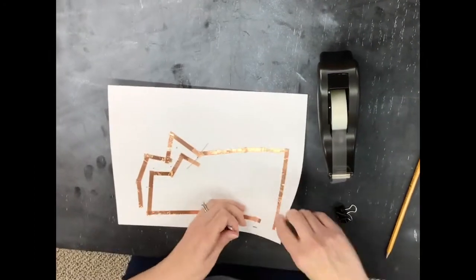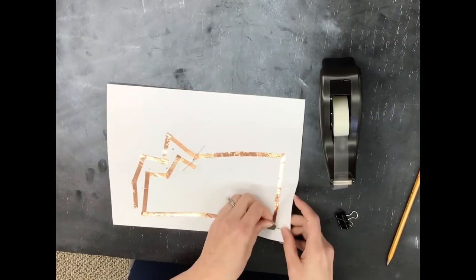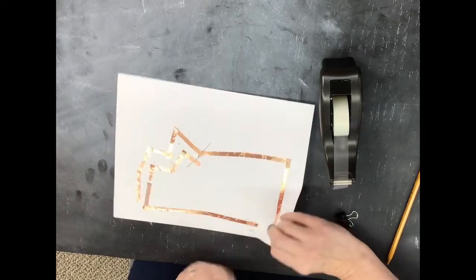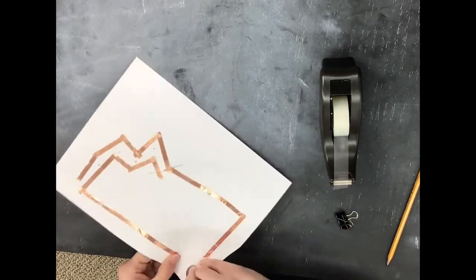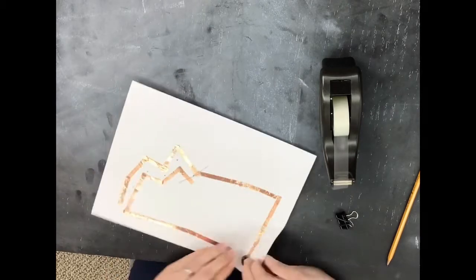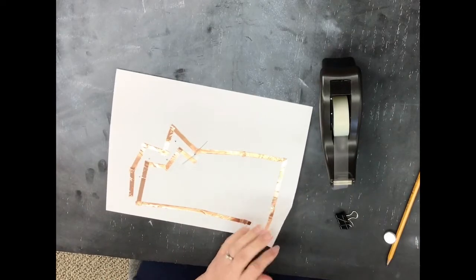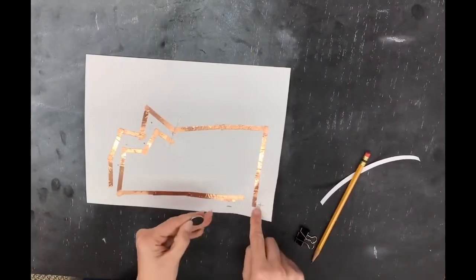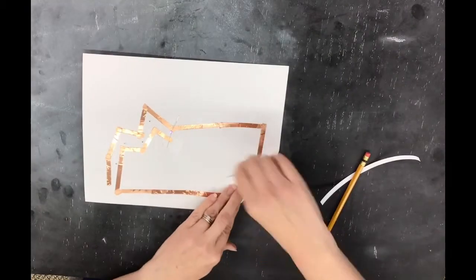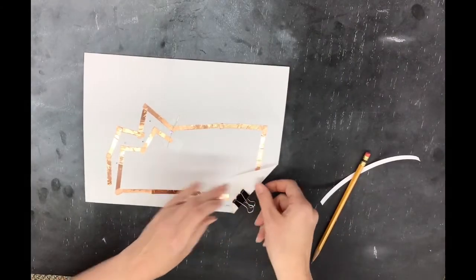Now we can attach the battery. Make sure the positive side of the battery is touching the positive lines of copper tape. Fold the corner so the positive and negative sides of the battery are touching the positive and negative lines of copper tape at the same time. Use a binder clip to hold in place. You can do this step before attaching all of your LEDs to make sure that they are working while attaching them.